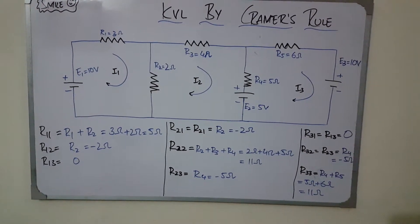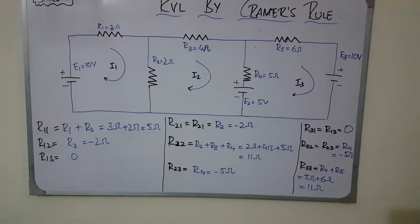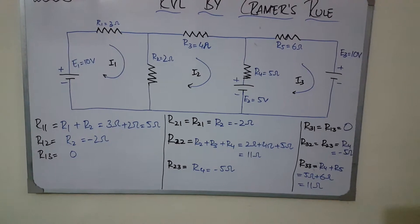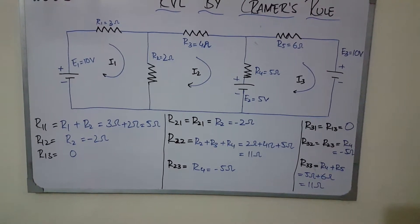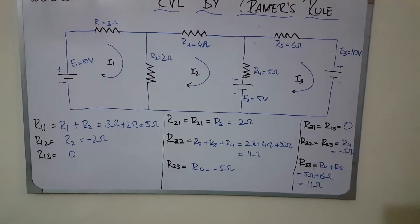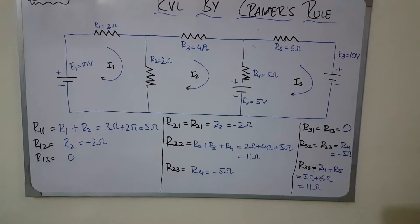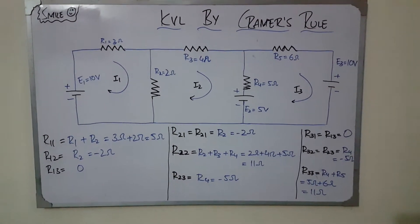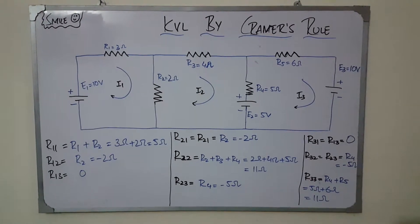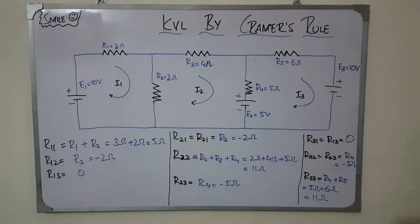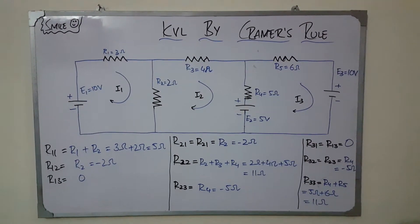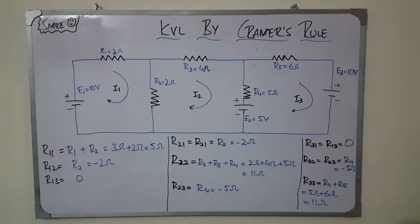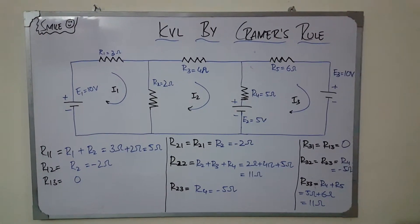R21 equals R12, and it equals R2, because in loop one and loop two there is only one common resistor, R2, and we put that value with a negative sign. R22 means all the resistors in the second loop — putting those values the answer becomes 11 ohms.